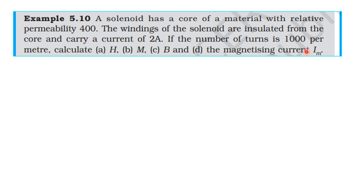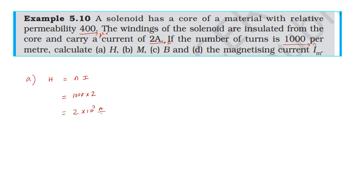The number of turns per unit length is 1000 per meter and the current is 2 amperes. So H = n × I = 1000 × 2 = 2 × 10³ ampere per meter. That is the answer for H, the first quantity.